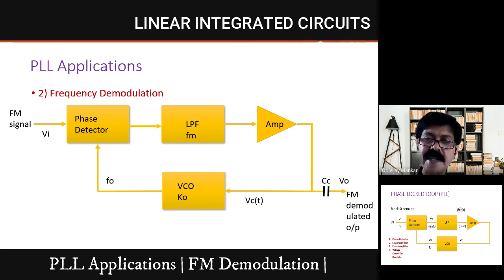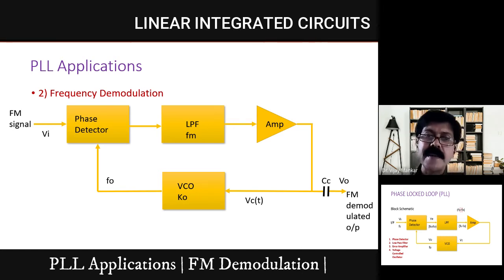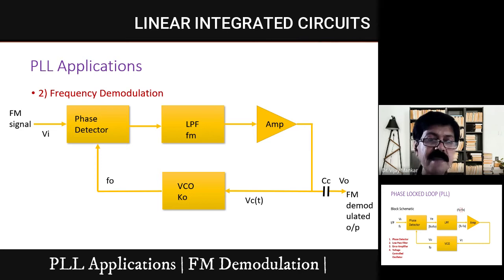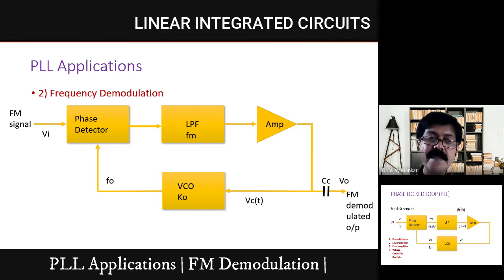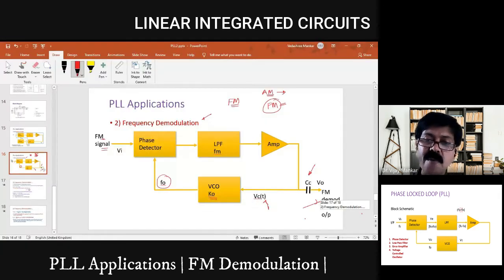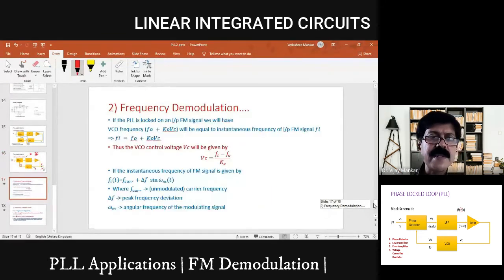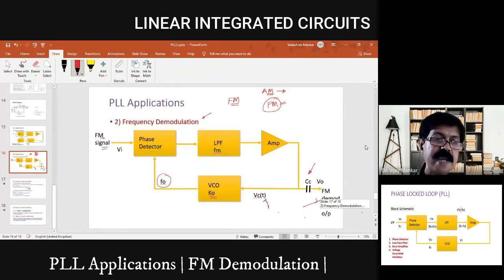For this FM demodulation application, only one component has been added to the basic PLL — just a capacitor given to the error amplifier output. With this, we get FM demodulation. The FM modulated signal is given as input. There is a VCO with gain Ko, and a control voltage VC which varies with time, producing the free-running frequency. The input FM signal frequency and VCO's frequency will be the same once the PLL is locked.